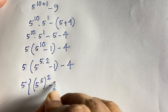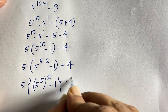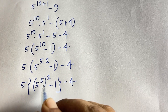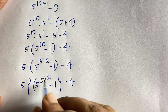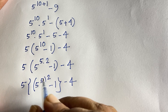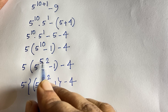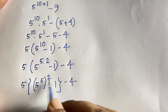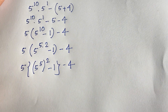You know the exponential rule: a to the power n, whole to the power m, equals a to the power n·m. According to this rule, I can say it will be 5 to the power 5, whole to the power 2. So the expression becomes 5 times (5^5)^2 minus 4.